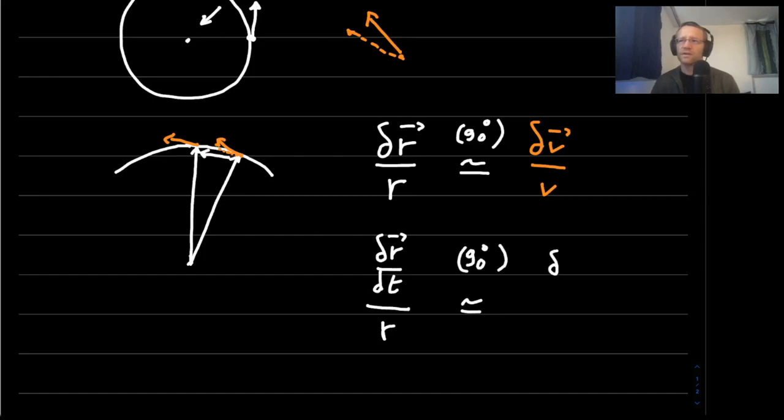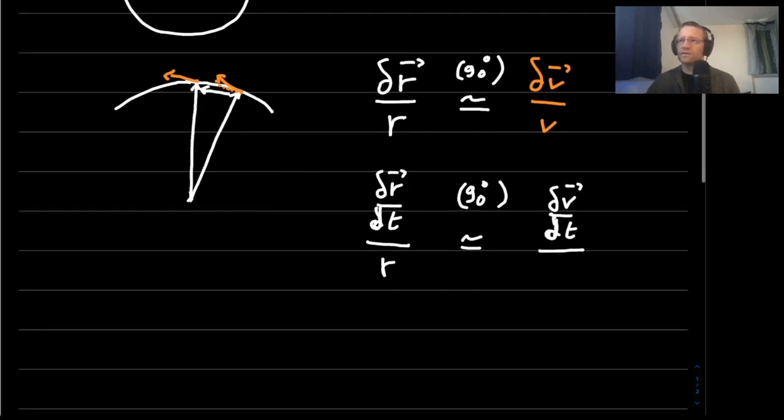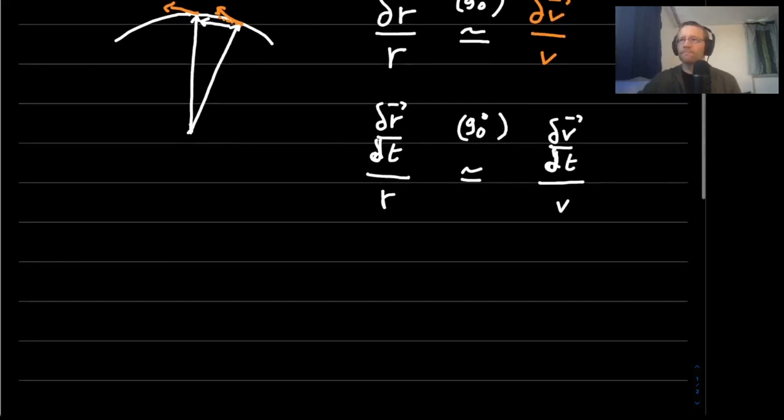So up to a 90 degree rotation again, we'll get the equation that the change in the position compared to the change in time, or compared to the change in time of the velocity vector, which leads to the equation that the velocity divided by the radius of the track is equal to the acceleration of the skater divided by his or her velocity.